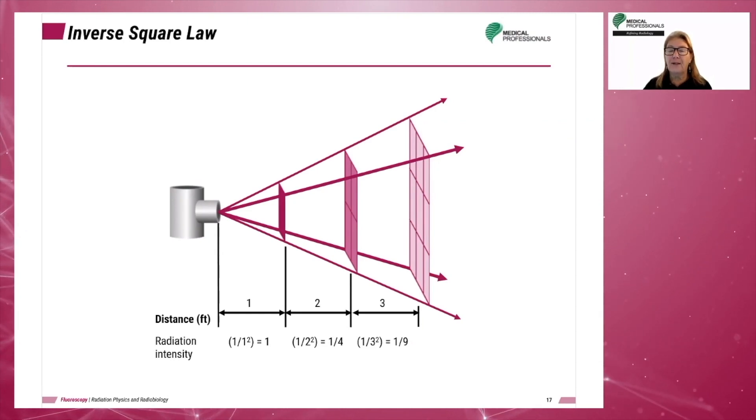These interactions contribute to some of the x-ray photons being absorbed and some being scattered, resulting in less photons traveling the full distance. The greater the distance, the greater the reduction in the number of photons, the dose, and the beam intensity. The opposite is also true.